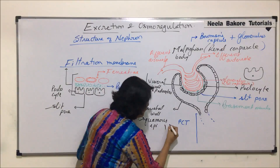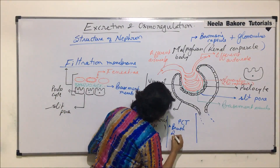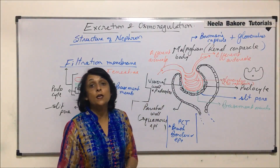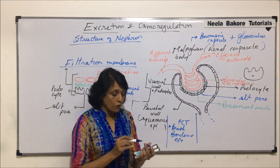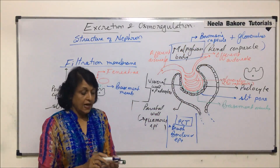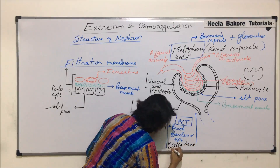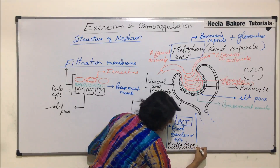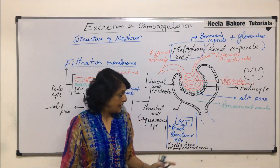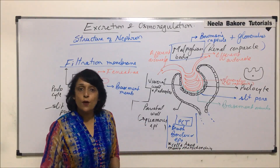PCT is made up of brush bordered epithelium. Brush bordered epithelium means the cells have microvilli. The cells of PCT also have many, many mitochondria. The reason why mitochondria are more is because here active absorption is going to take place, and for active absorption ATP is required — so these cells would have more number of mitochondria.